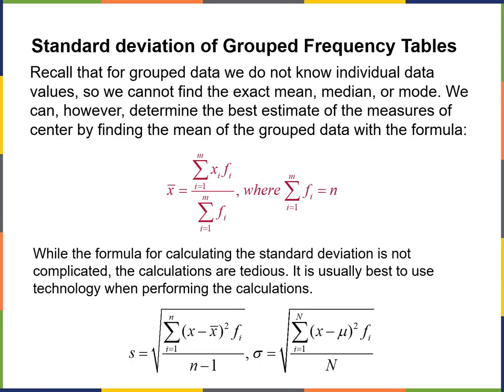For standard deviation of grouped frequency tables — for grouped data, we do not know individual data values, so we can't find the exact mean, median, or mode. But we can do an estimate of the measures of center by finding the mean of the group data. You can find the mean of group data with both Excel and JASP pretty easily. While the formula for calculating standard deviation is not complicated, the calculations are tedious and it's best to use software.